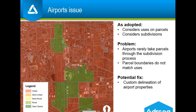Airports are really kind of their own thing. Our model does really well with parcels that go through the subdivision process; however, airports rarely go through that process to make a parcel or series of parcels that closely match the specific uses on the ground. Seeing that our major airports represent a limited number of cases, we're looking at a potential fix that would involve custom delineation that might not match parcel boundaries.